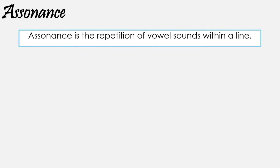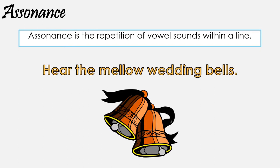Assonance. Assonance is the repetition of vowel sounds within a line. Out of the three techniques we're looking at today, these are probably the hardest to spot and probably the most frequently missed. Let's visit our friend Edgar Allan Poe again in his poem The Bells for an example: 'Hear the mellow wedding bells.' The repetition of the E sound in the middle of the final three words in the quotation is an example of assonance — it's a repeated vowel sound.